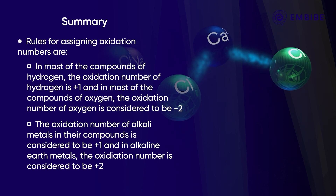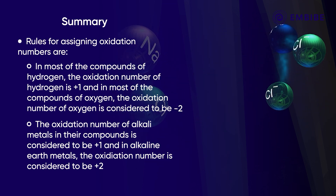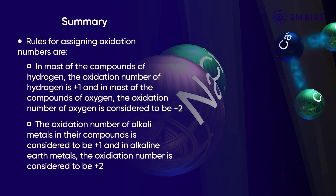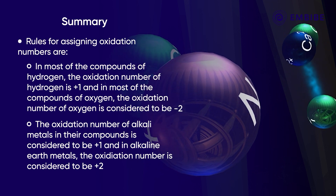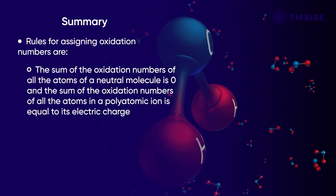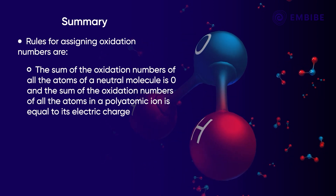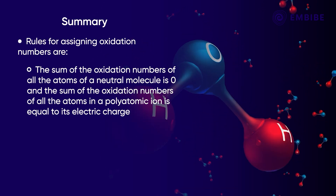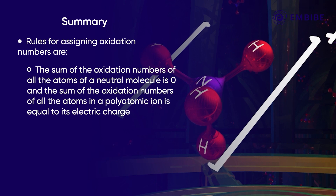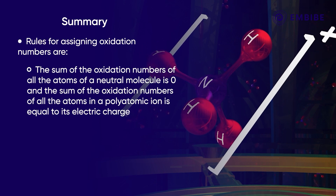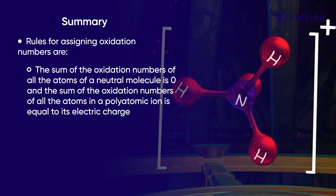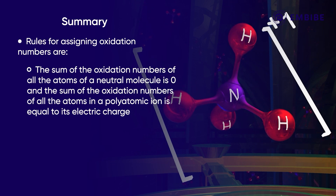The oxidation number of alkali metals in their compounds is +1, and the oxidation number of alkaline earth metals in their compounds is +2. The sum of the oxidation numbers of all elements in a neutral molecule is zero, and the sum of the oxidation numbers of all elements in a polyatomic ion is equal to its electric charge.